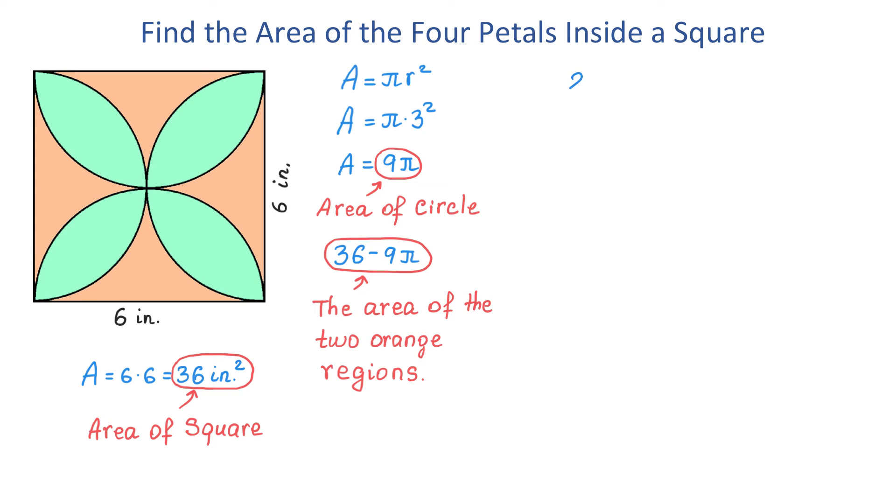Let's write 2 times 36 minus 9 pi. If we remove the parentheses, we will get 72 minus 18 pi. This expression represents the area of the four orange regions.